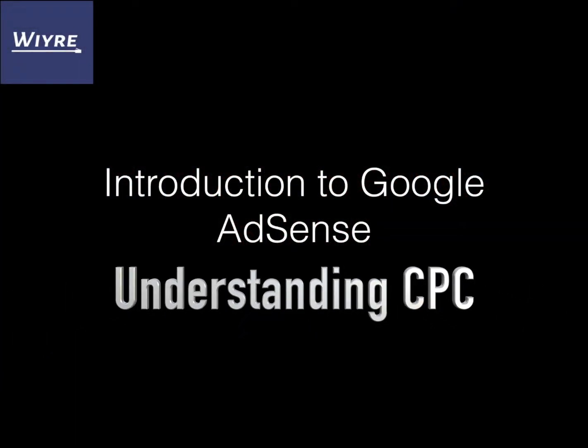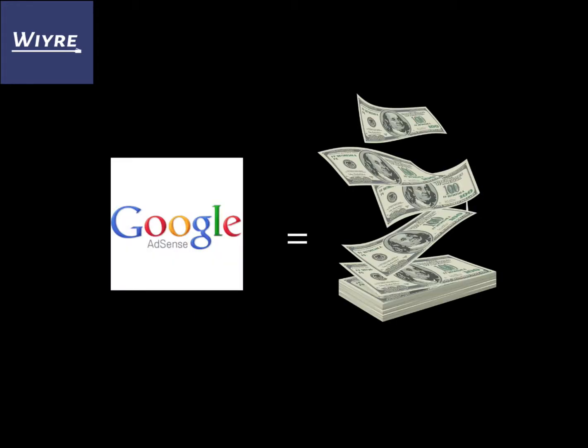Hey, everybody. So in this introduction, we're going to go over the basis of Google AdSense. Google AdSense is how content publishers make money online. So if you're trying to get into passive income or if you're trying to make a website or anything like that, it's important to understand how Google AdSense works because it is the biggest advertising network in the world.